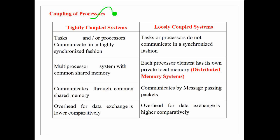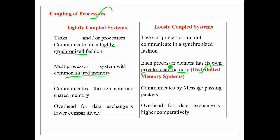Now let's see the key differences between them. In tightly coupled systems, tasks or processes communicate in a highly synchronized fashion, meaning the interaction between multiple processes is high. Whereas in loosely coupled systems, tasks or processes do not communicate in a synchronized fashion. In a tightly coupled system, multiprocessors always have a common shared memory, whereas in a loosely coupled system, each processor element has its own private local memory. That's why loosely coupled systems are also known as distributed memory systems.